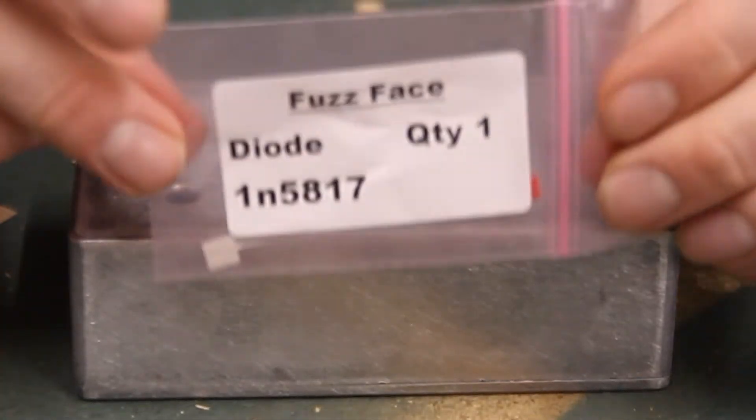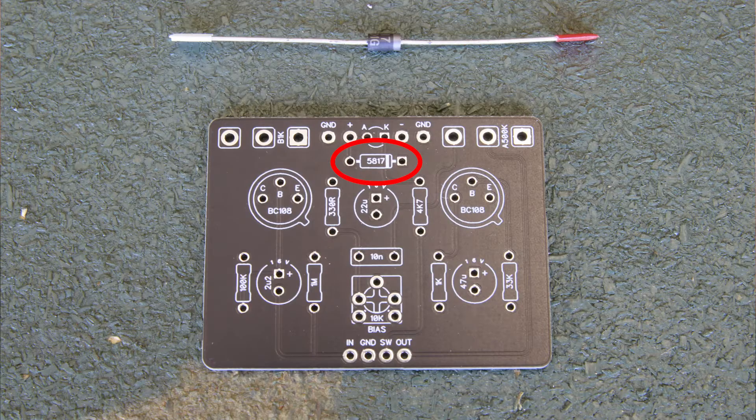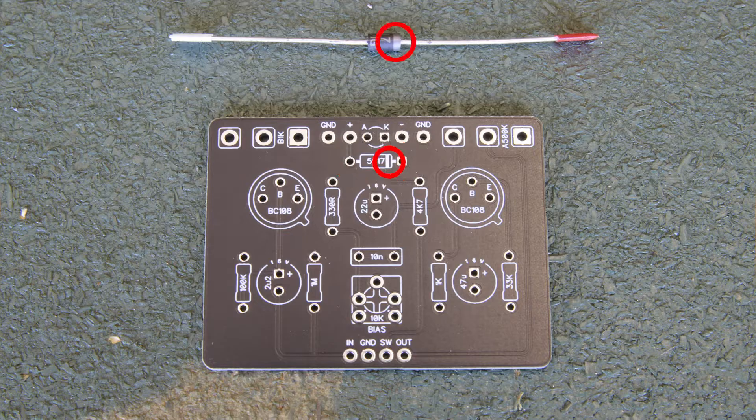Now find your 1N5817 diode. Diodes have polarity, so line up the side with the band to the thicker line on the PCB. If you solder this in backwards, the pedal will not turn on.